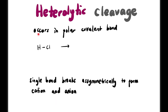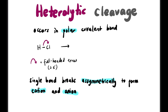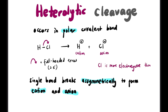Now let's talk about heterolytic cleavage. It occurs in polar covalent bonds — for example, HCl — where a single bond breaks asymmetrically to form a cation and an anion. In this case, both electrons go to Cl, so we draw a full-headed arrow showing both electrons moving toward Cl, producing Cl minus and H plus.